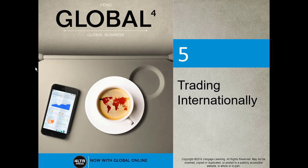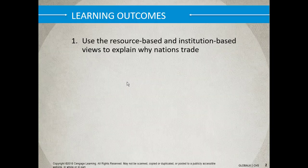We're digging a little bit deeper here with Part 2. As always, please make sure you read the chapter as we do this. Preferably, read it before you look at the slides. There's a lot of content here, so let's get started with the learning outcomes for this chapter. We'll use the resource-based and institution-based views to explain why nations trade — why do we need to trade, and how does it work?